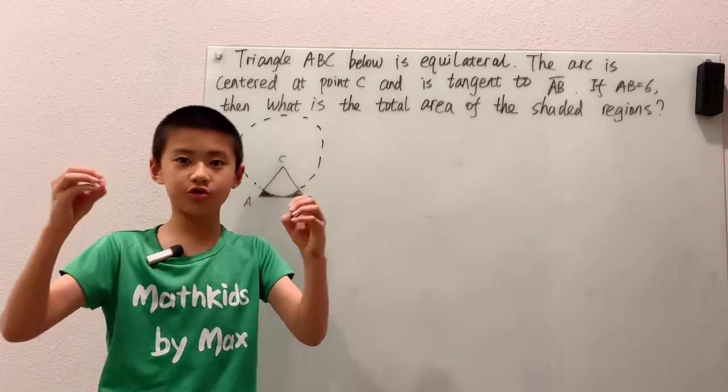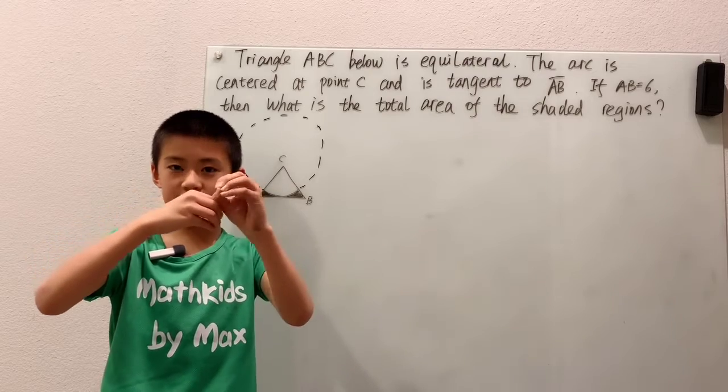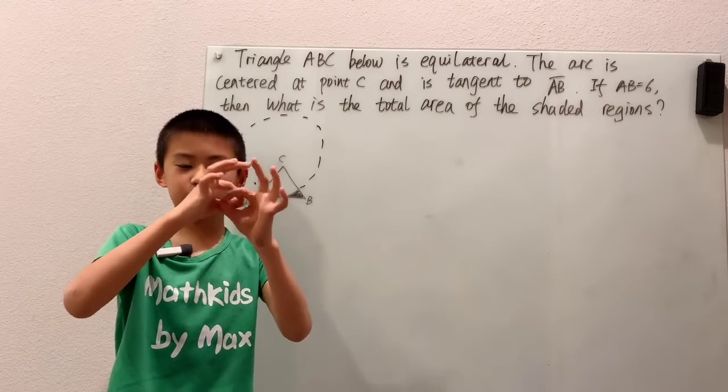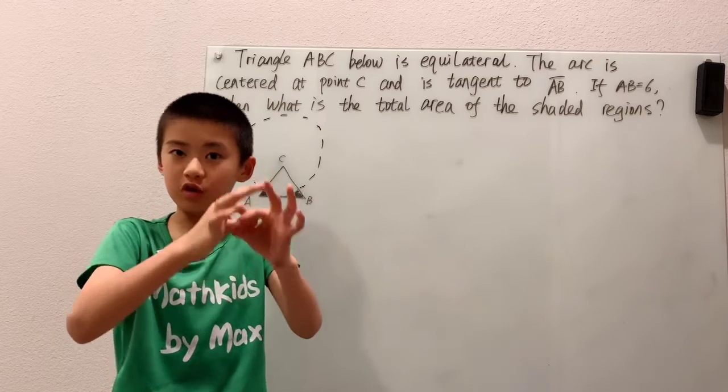For example, if you have two circles, these two circles are tangent, right? They only touch at one point. But if these two circles are overlapping, then they're no longer tangent, right? They're touching at two points.